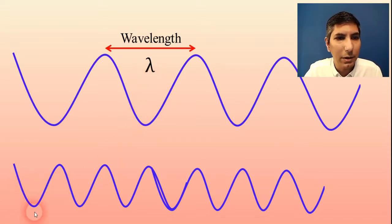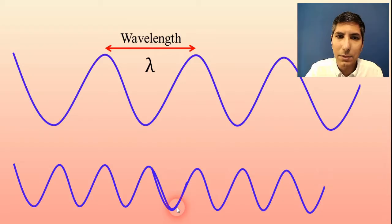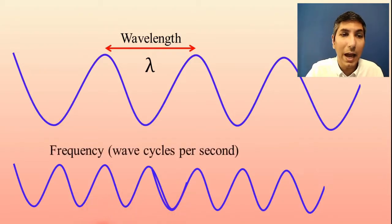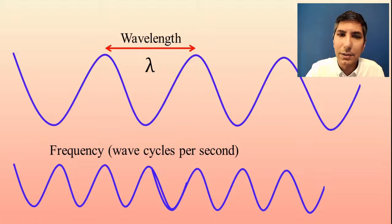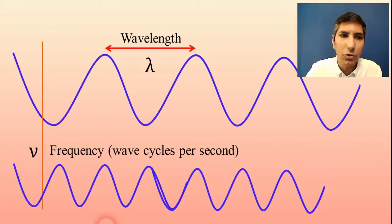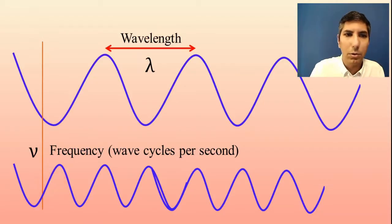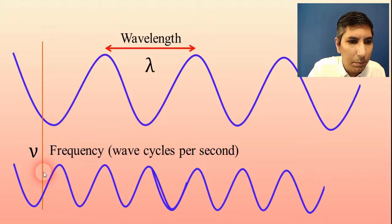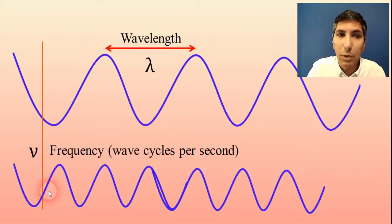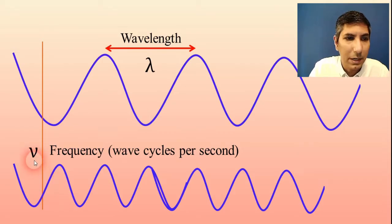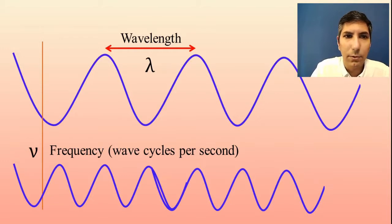As we look at this wave right here we can see that the wavelength is much shorter. It has a much shorter wavelength and as a result it has what we would say a higher frequency. Frequency refers to how many wave cycles hit a certain point per second. We have to remember that these waves are always in motion. The symbol for frequency looks kind of like a letter v — that's actually the Greek letter nu and that is our symbol for frequency.